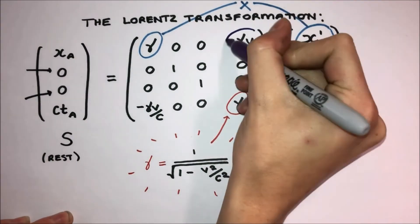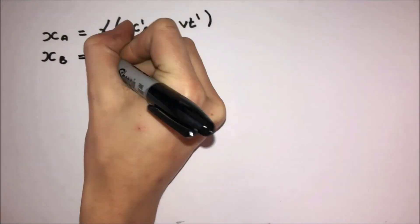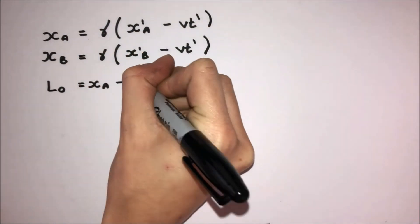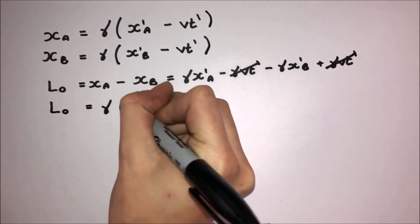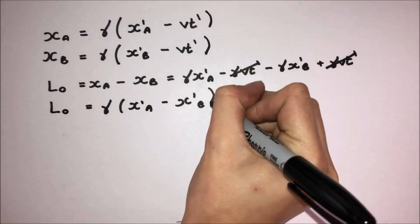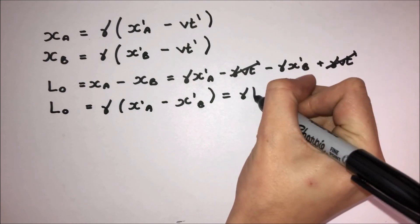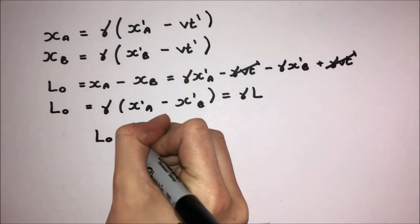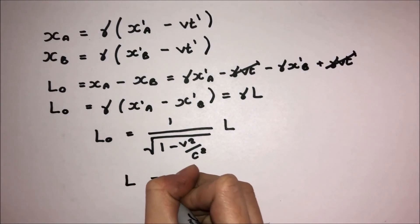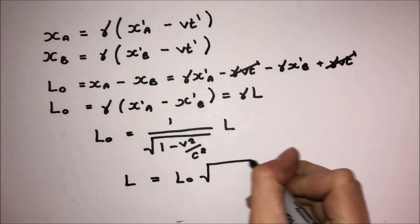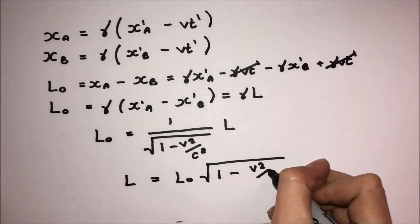So equating for the top two rows, you get these simultaneous equations for XA and XB. Subtracting XB from XA, we find that L0 is equal to Gamma times XA' minus XB'. We've already defined XA' minus XB' to be L. Therefore, L0 is equal to Gamma L. Finally, we get that L is equal to L0 times the square root of 1 minus V squared over C squared.